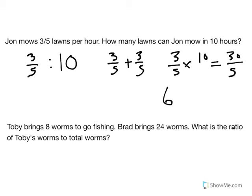Thirty divided by five is equal to six — but we're trying to find out how many lawns, so the answer is actually six lawns in ten hours, giving us an equivalent ratio.